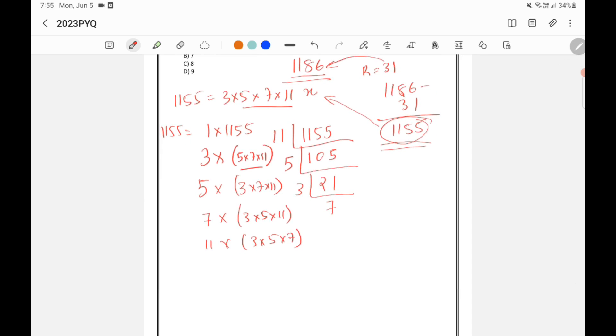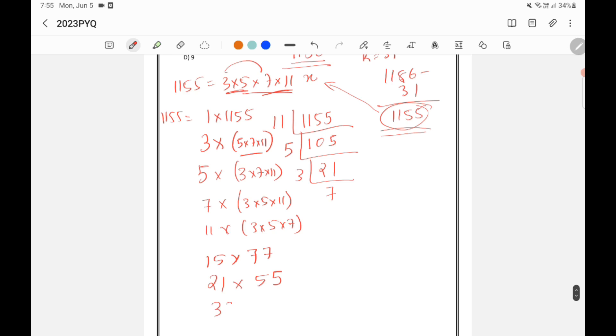We can also write it as 3 into 5, 15 into 7 into 11, that is 77. We can write it as 3 into 7, that is 21 into 55. We can write it as 33, that is 3 into 11 is 33 into 35. So these are the different ways in which we can write 1155. That means these are all factors.